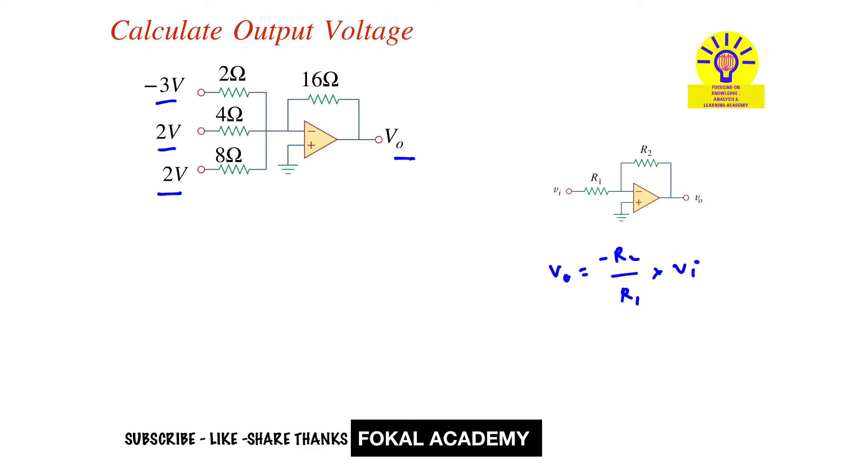Now I'm going to use this formula for getting each contribution. For this voltage source the output voltage contribution is V1, for this source V2, and for this source V3. This is the voltage contributed by each of the three sources.